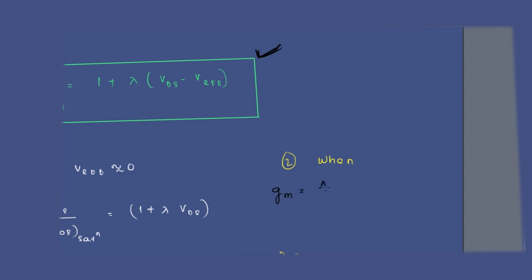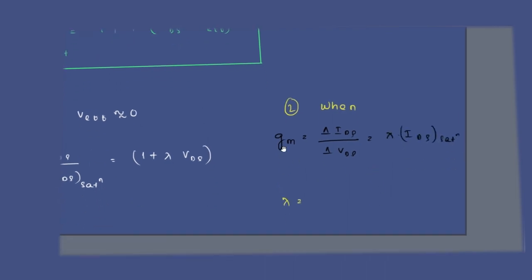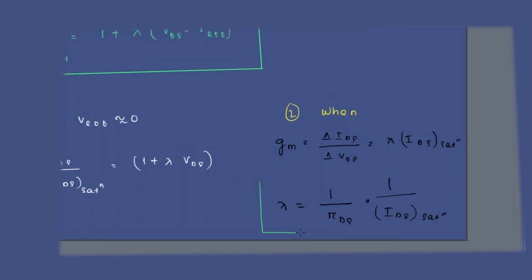When gm equals ∂IDS / ∂VDS — the change in output current with respect to output voltage — taking the derivative from the IDS expression gives: gm = λ · IDS_sat. Therefore, λ = gm / IDS_sat. Since transconductance gm equals 1/rds, we also get: λ = 1 / (rds · IDS_sat). This is an extremely important formula for the GATE exam.